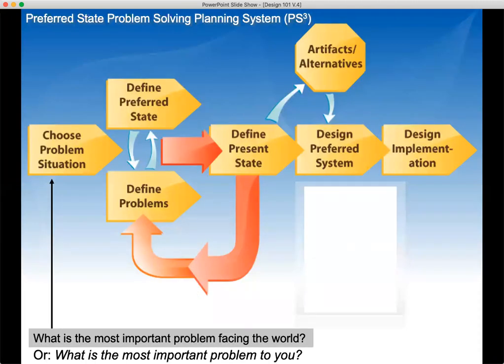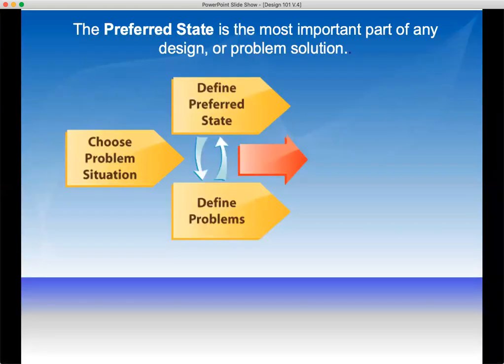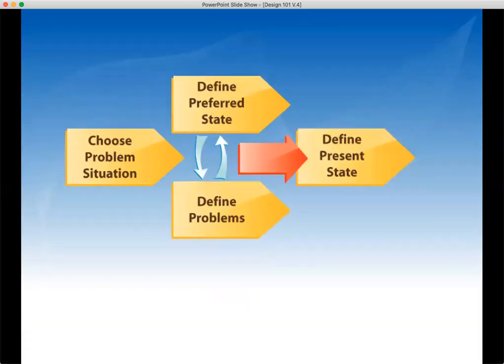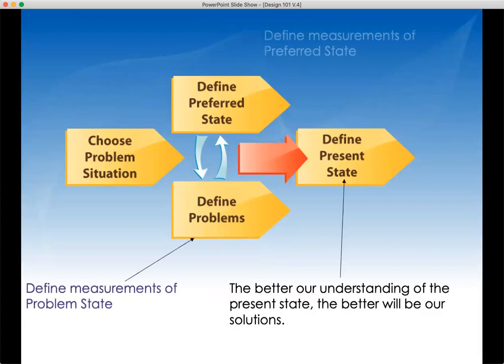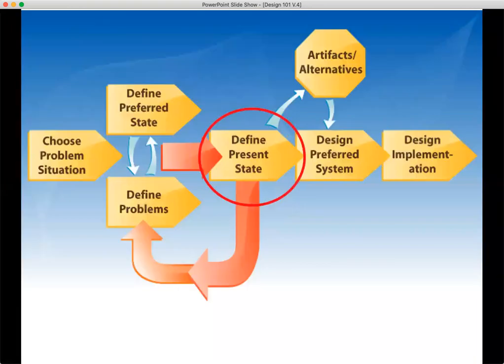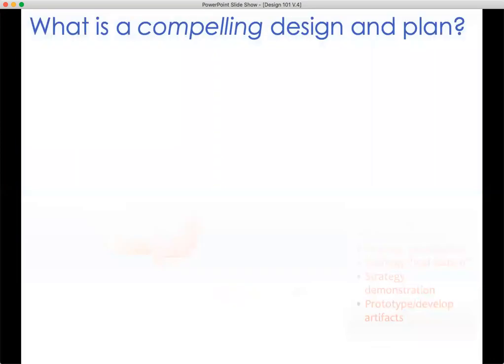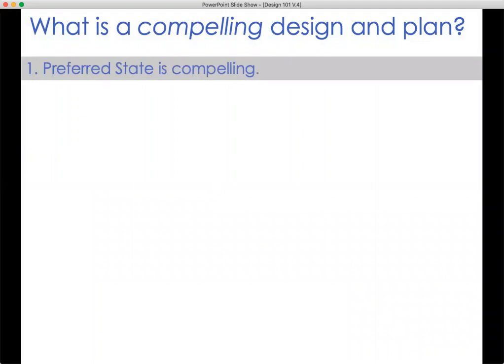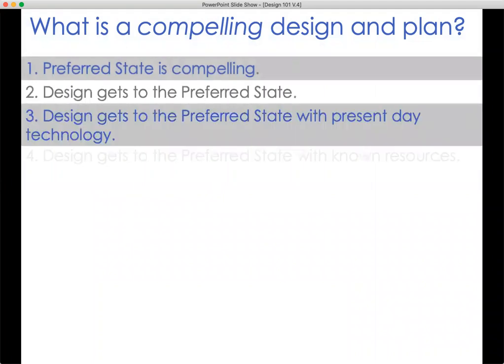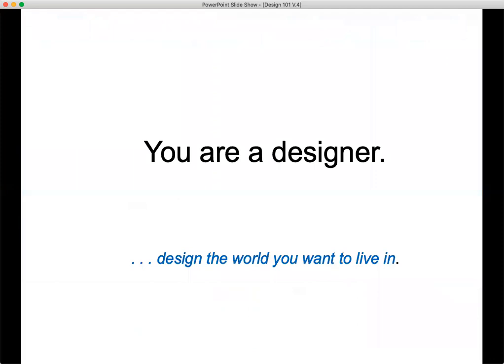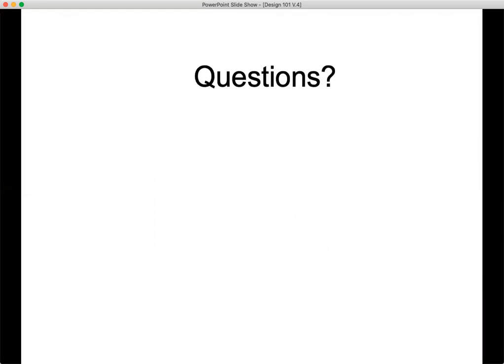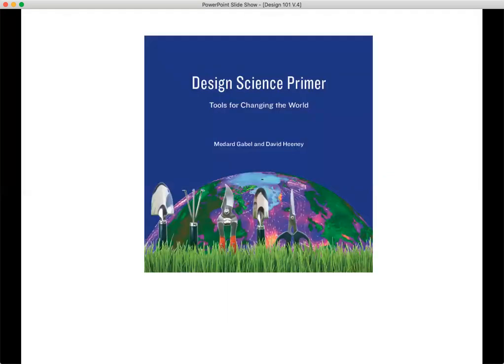And here are more details on the planning process: choose the problem, the preferred state, the present state and measure it. What is the preferred state, which is the critical part of what we're doing? And what alternatives, artifacts, implementation — what is a compelling design and plan? That's pretty much where we're going to wind up this session. Basically, you're the designer — design the world you want to live in. We'll be asking and answering questions in the future. Thank you for the designs you will do.